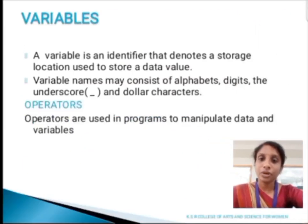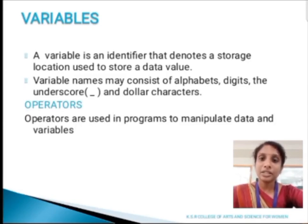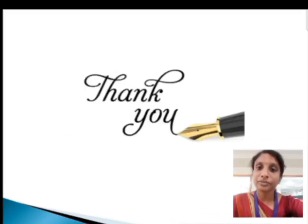Next, we are going to see about variables. A variable is an identifier that denotes a storage location used to store data values. A variable name consists of alphabet, digits, underscore and dollar characters. Next, we are going to discuss about operators. Operators are used in a program to manipulate data and variables. Thank you.